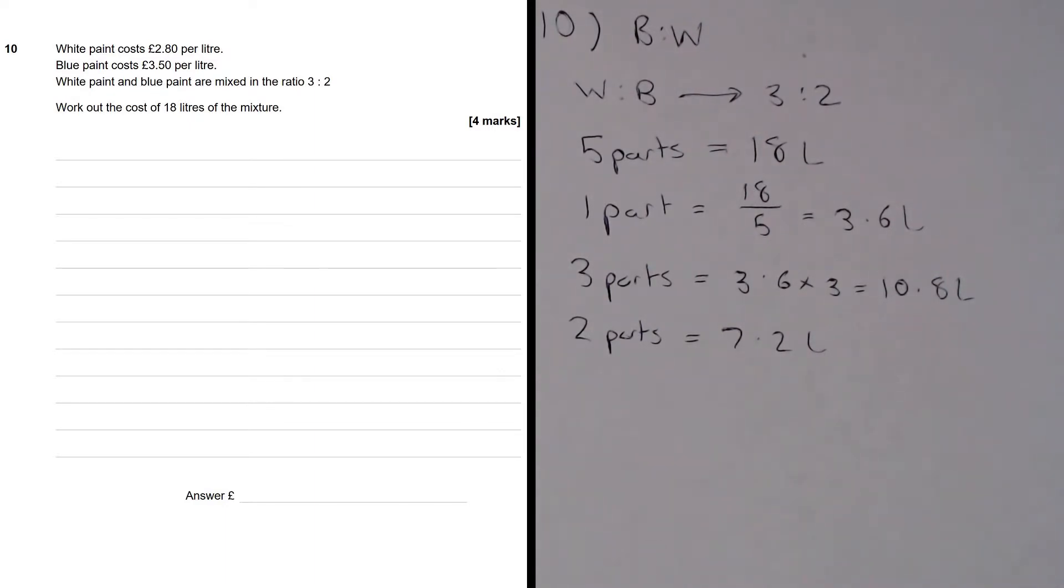So we now know that we need 3 parts white paint, 2 parts blue paint and that equates to 10.8 litres of white paint and 7.2 litres of blue paint.